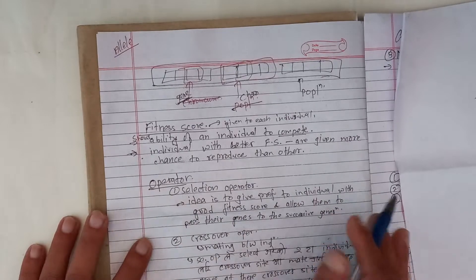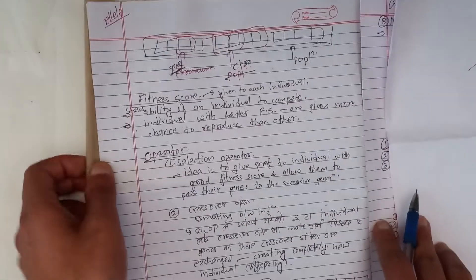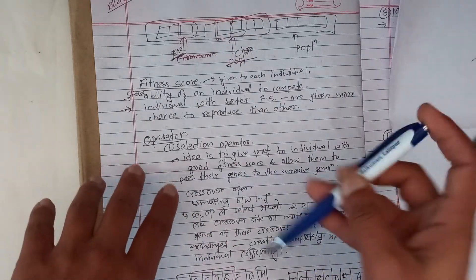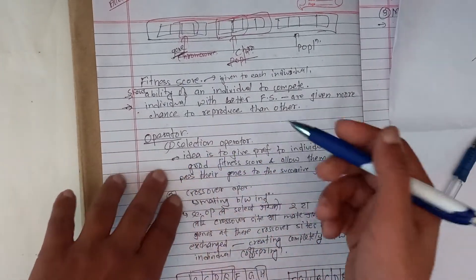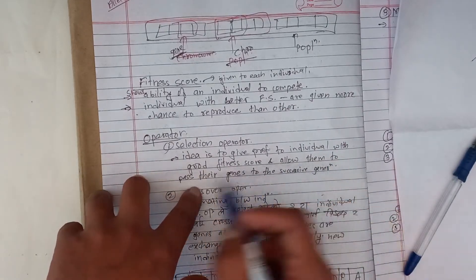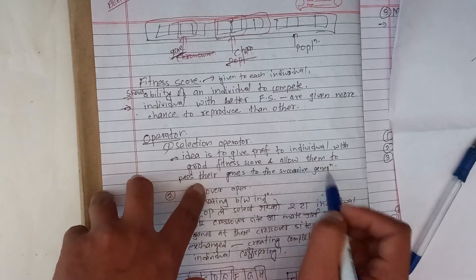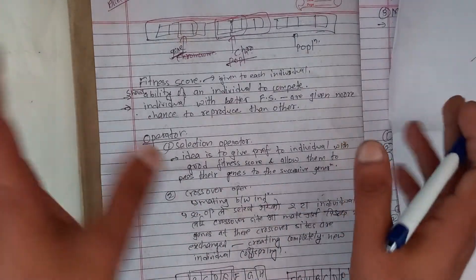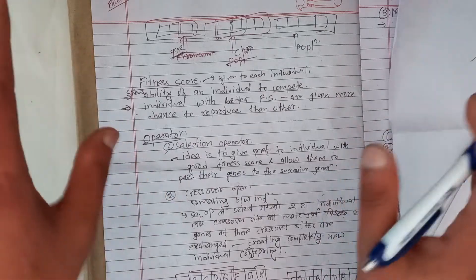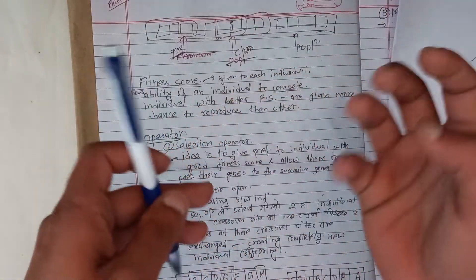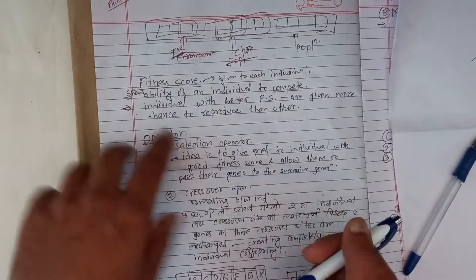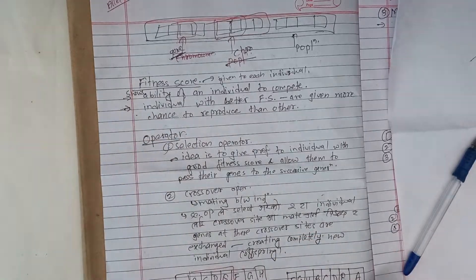So what is the operator? The first is the selection operator. The idea is to give preference to individuals with good fitness scores and allow them to pass their genes to the successive generation. A fitness score is given to each individual in the population.